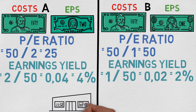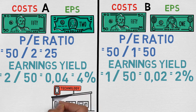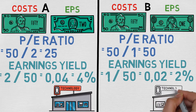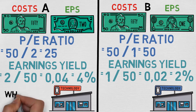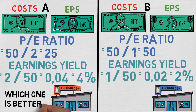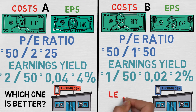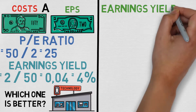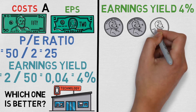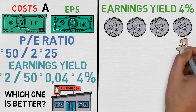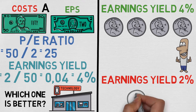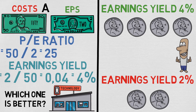The earnings yield varies a lot depending on many different factors. But let's say that these two companies are operating in the same sector and are almost identical. The answer is A. Company A has an earnings yield of 4%, which means that every dollar invested gives you 4 cents. Company B has an earnings yield of 2%, which means that every dollar invested gives you 2 cents.